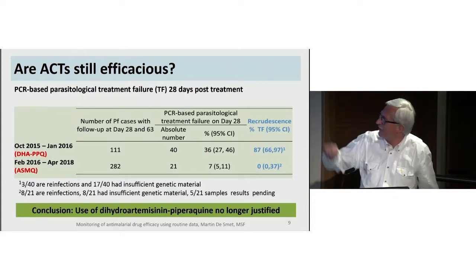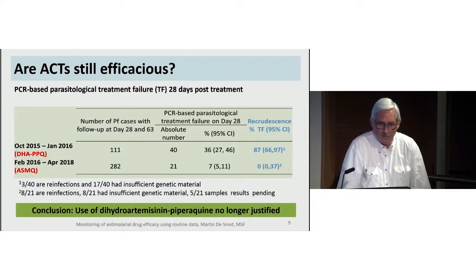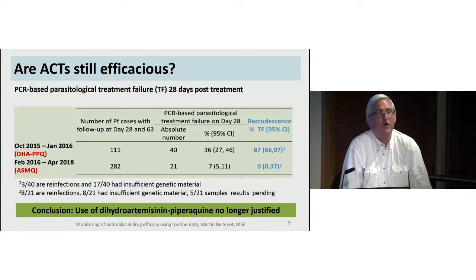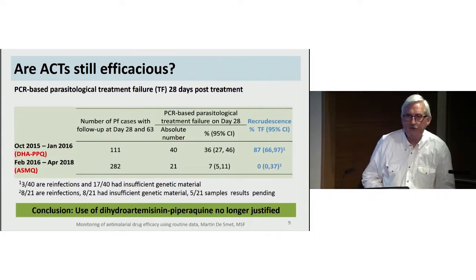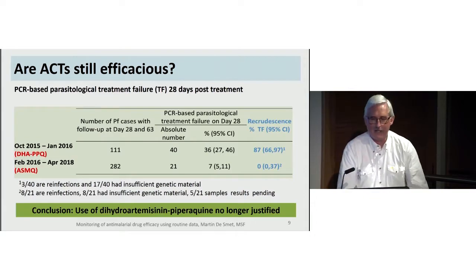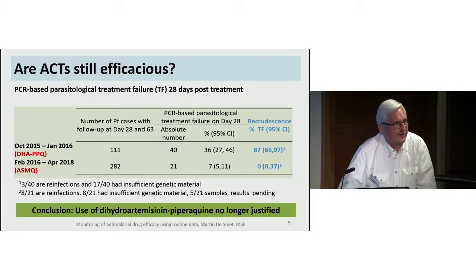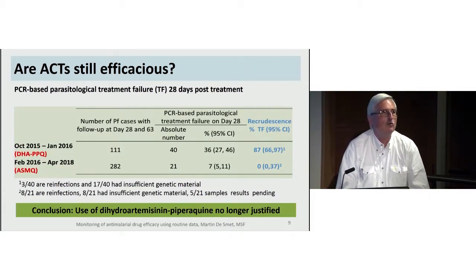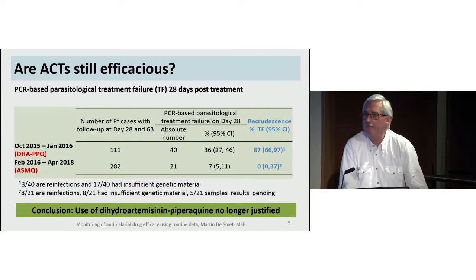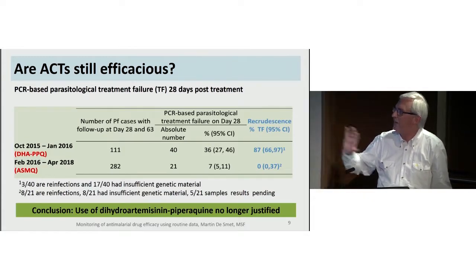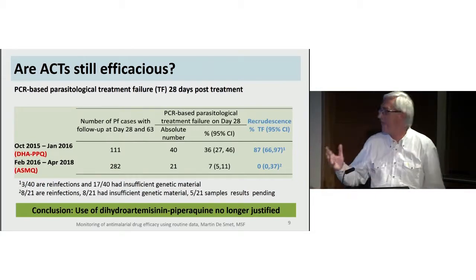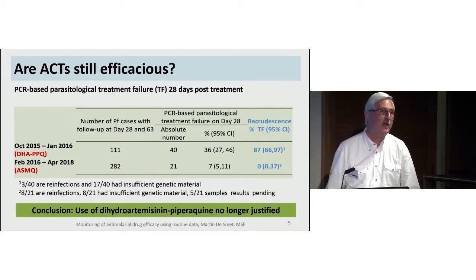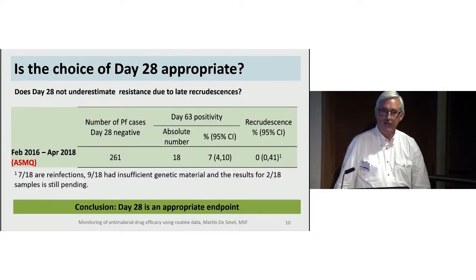Looking at the results: when we were still using dihydroartemisinin-piperaquine, we had 36% treatment failures, and the vast majority were recrudescences — meaning the parasites were not eliminated by the drug. Because of that resistance, we switched to artesunate-mefloquine. With that drug, we have only 7% treatment failures, and moreover not a single recrudescence — all positives were reinfections. Note that we had quite a few samples with insufficient genetic material, so this is based on relatively small numbers.